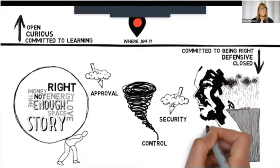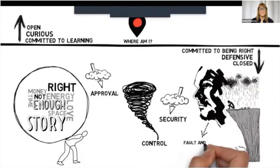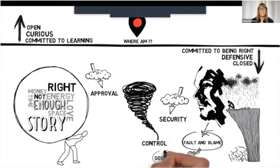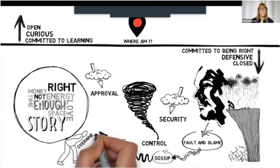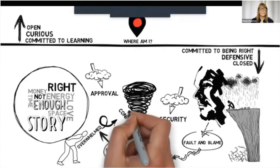People below the line tend to behave in certain ways as well. They tend to cling to an opinion, find fault and blame, gossip, explain, rationalize and justify, get overwhelmed and avoid conflict, or pursue conflict for the sake of winning.